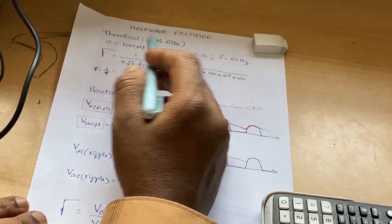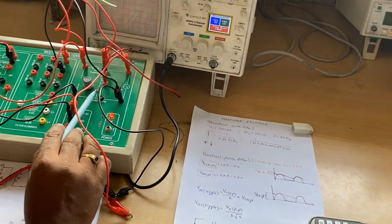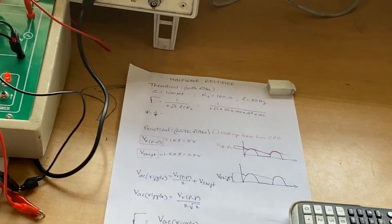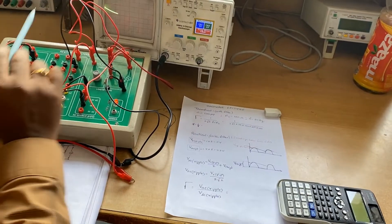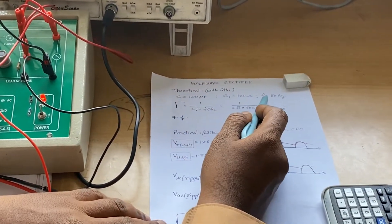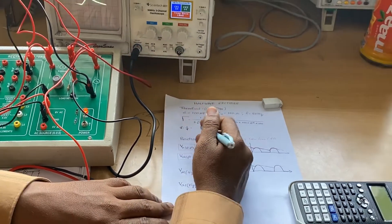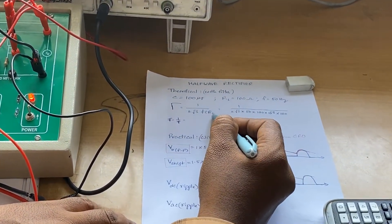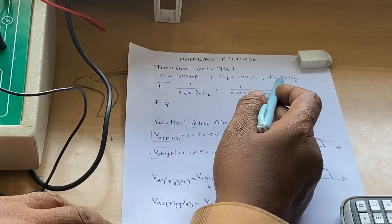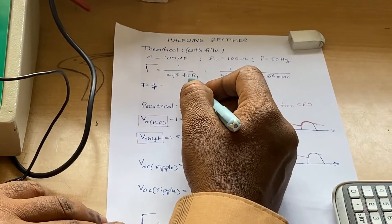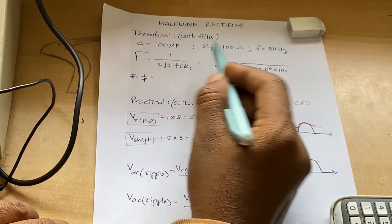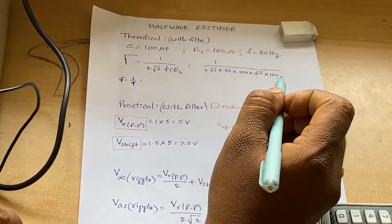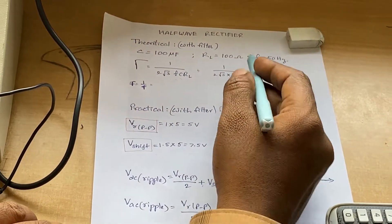For the theoretical value with filter, consider RL = 100 Ω, C = 100 µF, and frequency f = 50 Hz. The ripple factor formula is γ = 1/(2√3 × f × C × RL). Substituting: 1/(2√3 × 50 × 100×10⁻⁶ × 100). By doing this calculation you get the theoretical ripple factor.